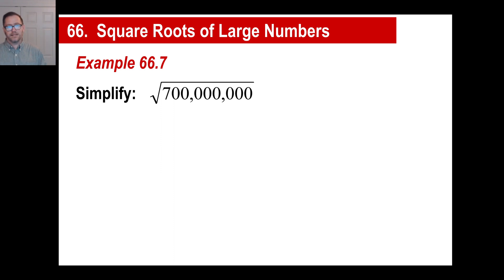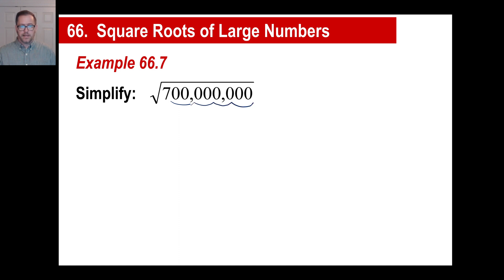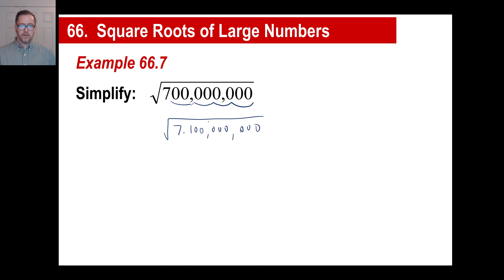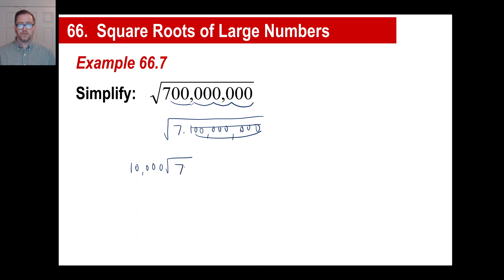Let's try the square root of 700 million. Count the zeros — we've got eight. So we break this up as 7 times 100,000,000. We have eight zeros, which means our outside is going to have four zeros: 10,000. We've taken care of everything here except the 7, and there's nothing else you can do. So the answer is 10,000 square root of 7.